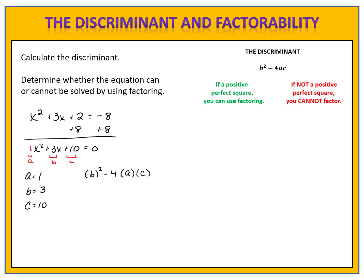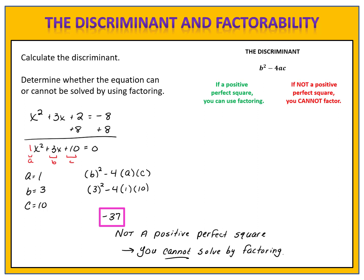We use the formula b squared minus 4ac to determine the value of the discriminant: 3 squared minus 4 times 1 times 10. We type that directly into our calculator and we see that the value of the discriminant is negative 37. Negative 37 is not a positive perfect square, so we cannot solve this equation by factoring. We must use a different method — completing the square or the quadratic formula — to find the solution or solutions. Remember, the discriminant does not tell us what the solutions are; it's simply a tool to determine whether we can use factoring.